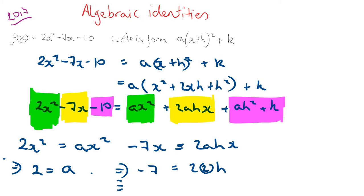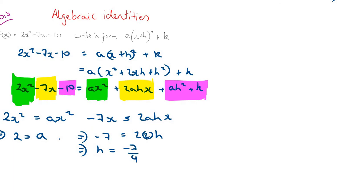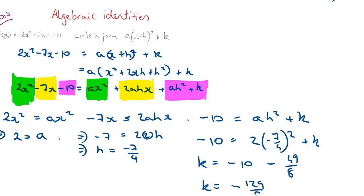And looking at the pink boxes then, minus 10 equals ah squared plus k, so minus 10 equals 2 times minus 7 over 4 squared plus k. Rearranging that, then k is equal to minus 10 minus 49 over 8, and we're left with k equals minus 129 over 8.